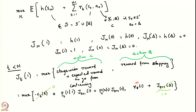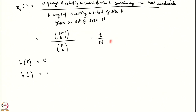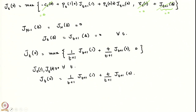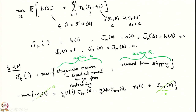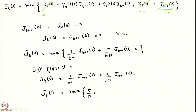Going back to j_t(1): it has the term (1/(t+1)) times j_{t+1}(1) plus (t/(t+1)) times j_{t+1}(0) from continuing, and r_t(1) from stopping. Recall that r_t(1) equals t/n. The expected reward from continuing is exactly j_t(0), as derived. So j_t(1) equals the max of (t/n) comma j_t(0). This gives us two key recursions to solve for the value function.